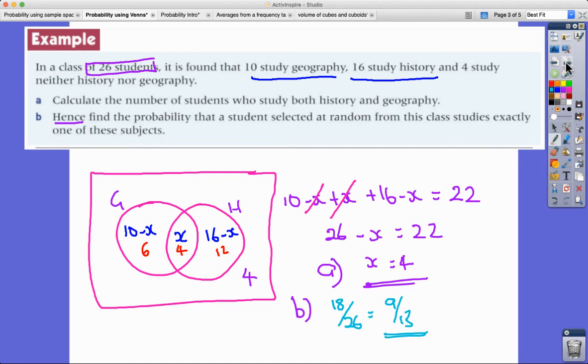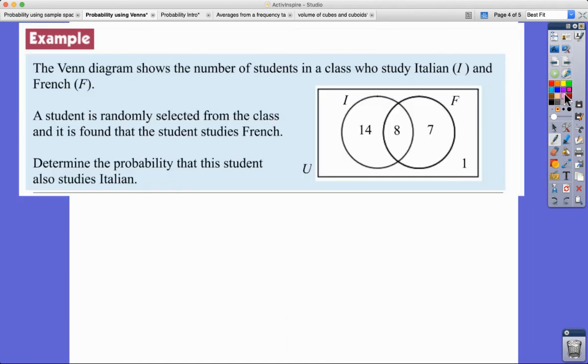Final question I just want to touch on, this is what we call conditional probability and sometimes the way questions are worded can lead you to this sort of approach. So the Venn diagram shows the number of students in a class who study Italian and French. A student is randomly selected from the class and it's found that they study French, so already we've got that condition that they study French. Given that first bit of information they study French, determine the probability that the student also studies Italian.